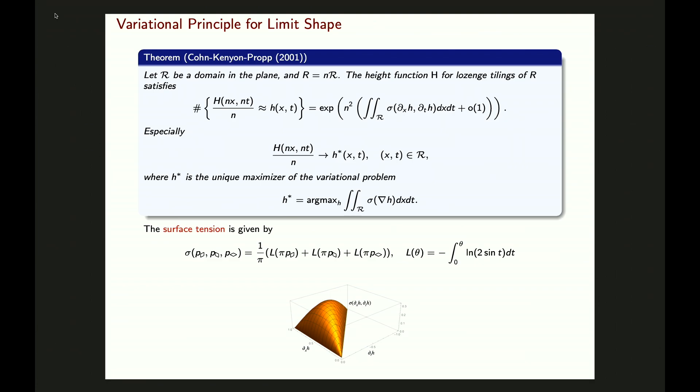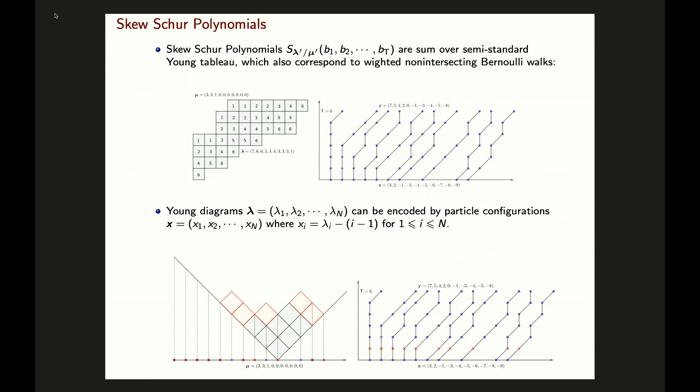By looking at the maximum of the surface tension, we get the limit shape: the rescaled height function converges to h-star, which maximizes the surface tension. Because the surface tension is only strongly concave in the interior and linear on the boundary, you get the frozen region and liquid region. The frozen region corresponds to the height function gradient taking values on the three vertices. This gives the large deviation for lozenge tiling and also the large asymptotics for Schur polynomials.